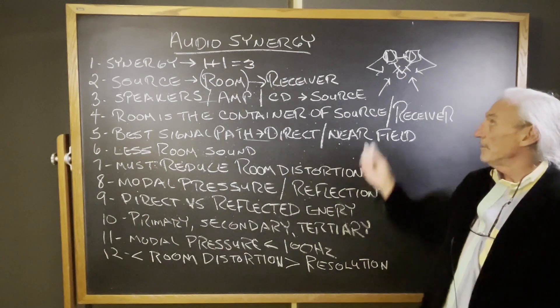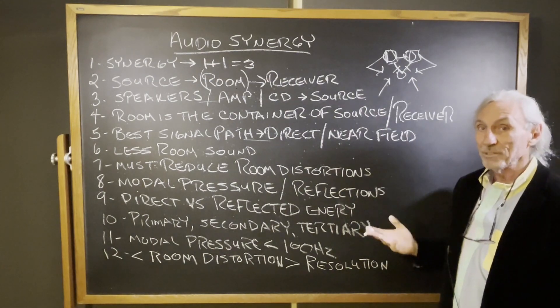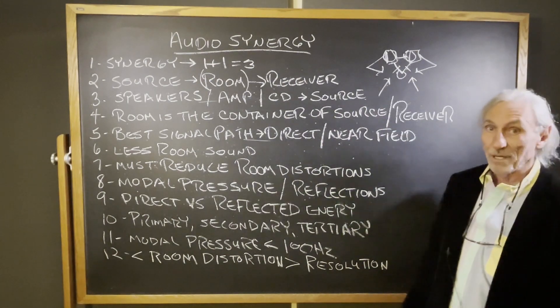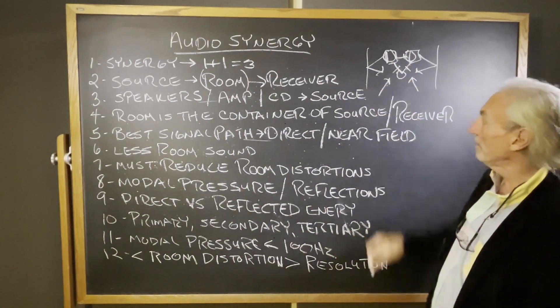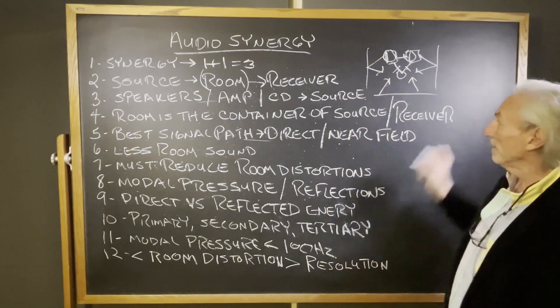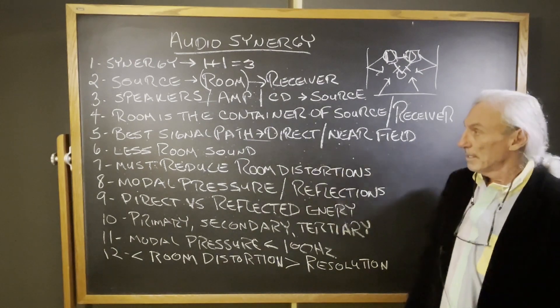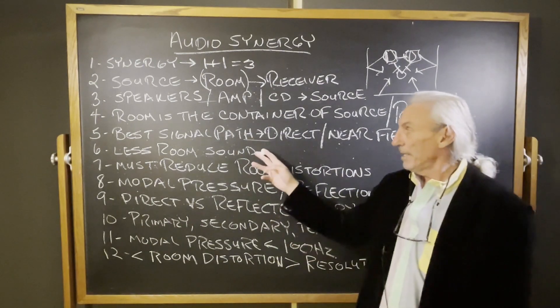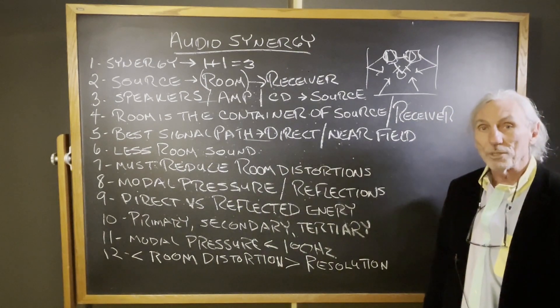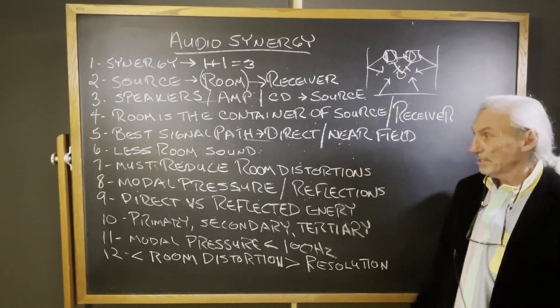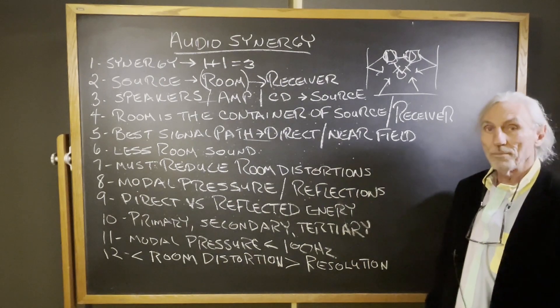That's why this is an equilateral triangle, because we know sound travels at a certain speed. We want the arrival times to be equal. That's the beauty of stereo. Once you get them equal and you get the sidewall reflections balanced, you do get synergy. But look at what you got to go through to get it. We want less room sound. We must reduce the room distortions.